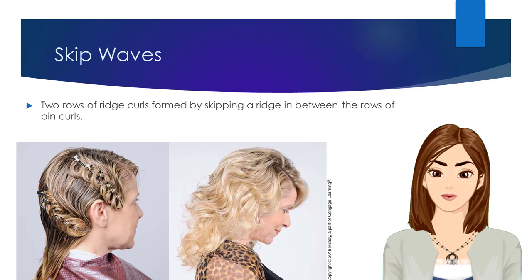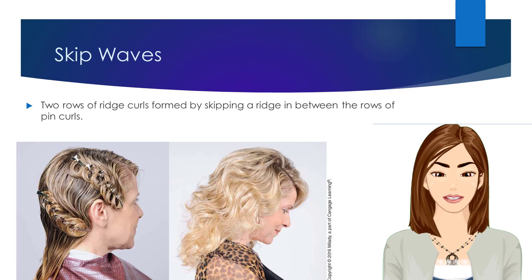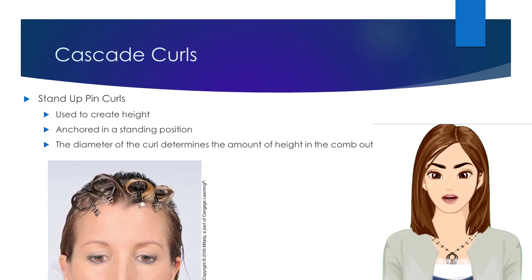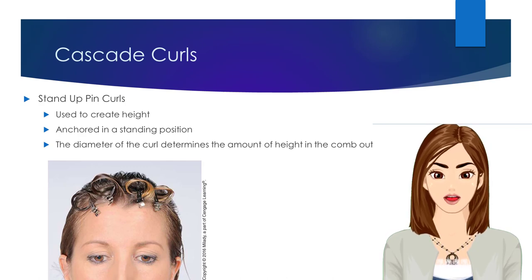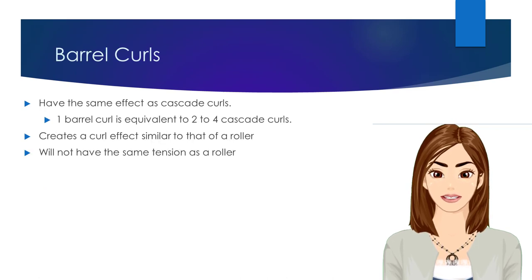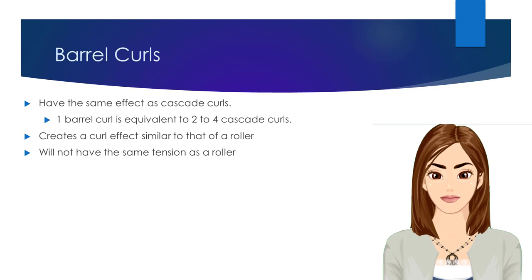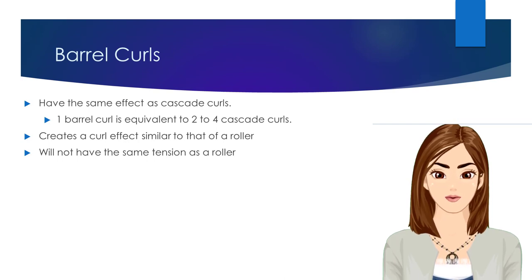Ridge skip waves are two rows of ridge curls, formed by skipping a ridge in between the rows of pin curls. Cascade curls are also known as stand-up pin curls. They are used to create height and are anchored in a standing position. The diameter of the curl determines the amount of height in the comb-out. Barrel curls have the same effect as cascade curls; one barrel curl is equivalent to two to four cascade curls. Barrel curls create a curl effect similar to that of a roller, but will not have the same strength or lasting ability as roller curls, because a barrel curl is created with a lot less tension.